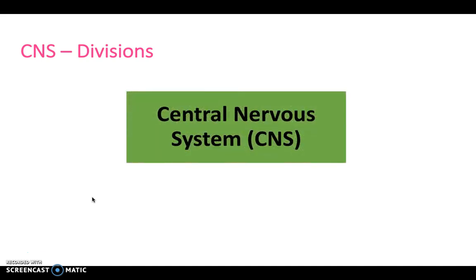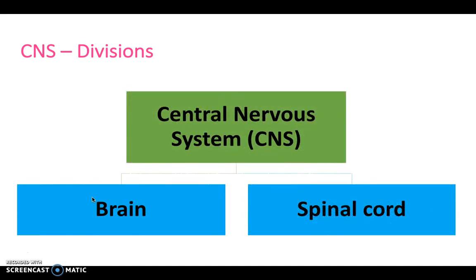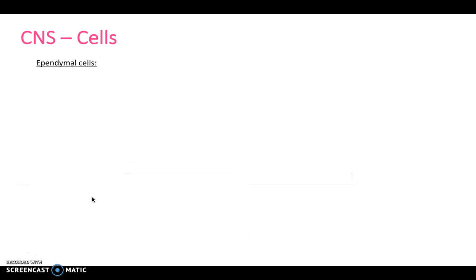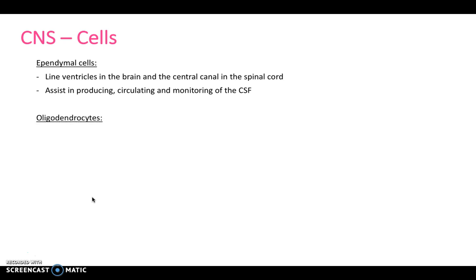The central nervous system is divided into the brain and spinal cord. In terms of the cells of the central nervous system, we have ependymal cells. These are the cells that line the ventricles of the brain and the central canal in the spinal cord. They assist in producing, circulating, and monitoring of the CSF. Oligodendrocytes myelinate the central nervous system axons, and they're the equivalent of Schwann cells which exist in the peripheral nervous system.